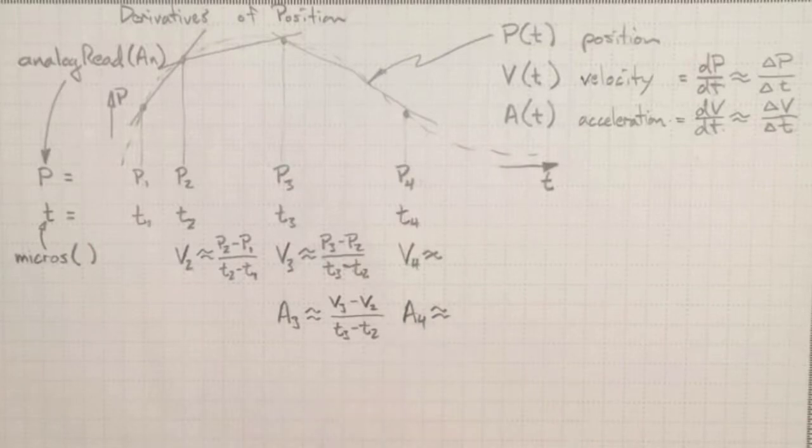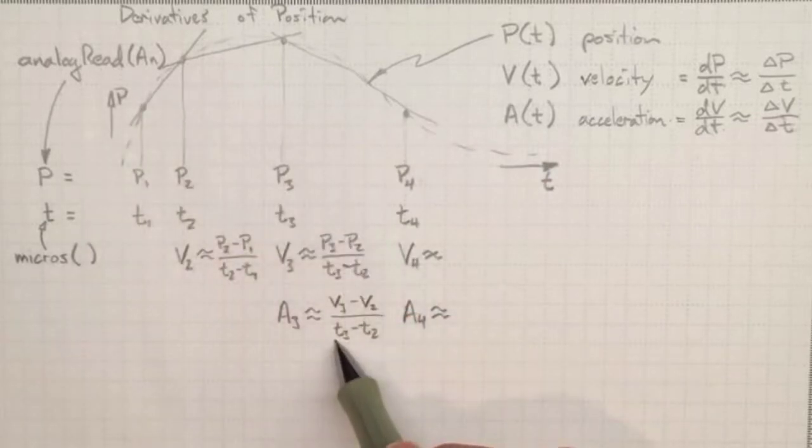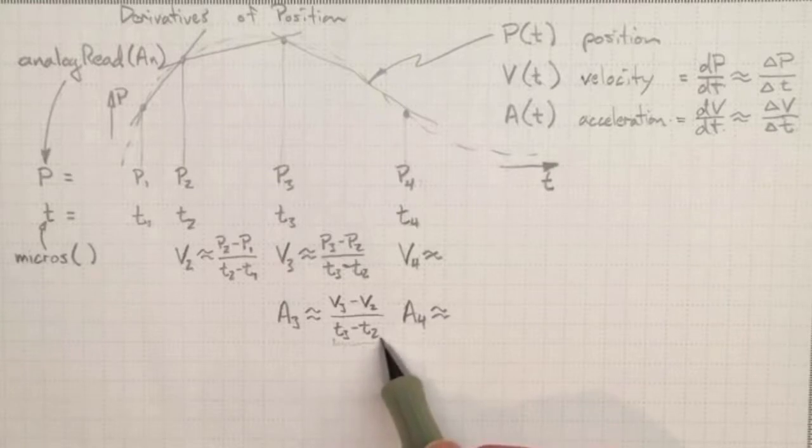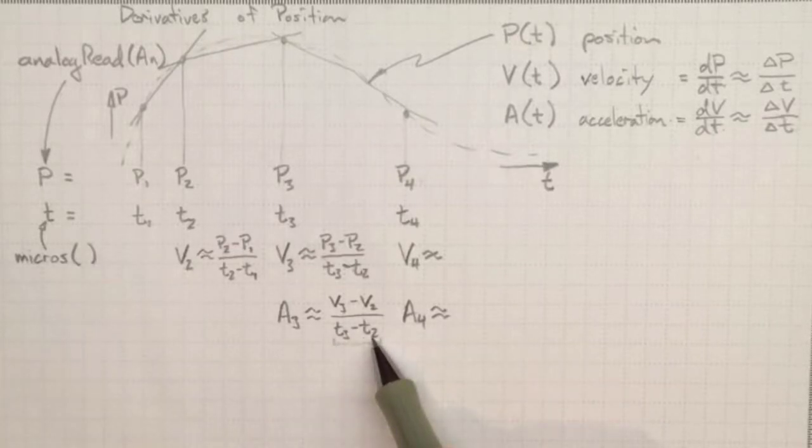Except, and there's always a catch. The closer we push these together in time, the less certain we are how much time has actually gone by. In fact, in the extreme, if they got to be inside four microseconds of each other, we really don't know what we get here. We might sometimes get the same value back from micros, so our time is going to be uncertain.